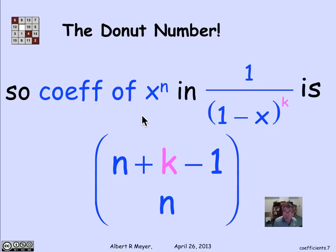So that's cool. By a counting argument without doing any algebra or derivatives or other methods, we have just figured out that the coefficient of x to the n in the infinite series that's equal to 1 over (1 minus x) to the k is this binomial coefficient that we knew already.